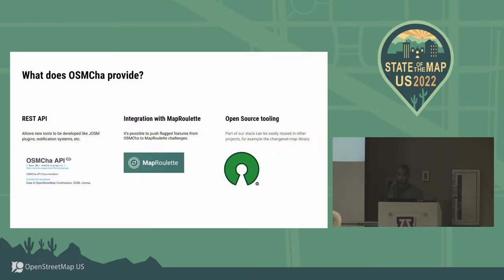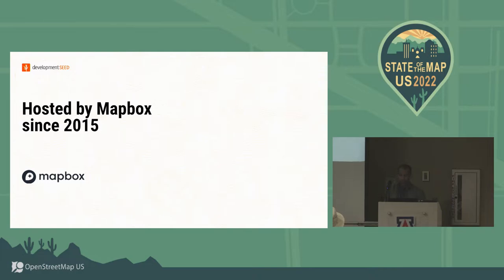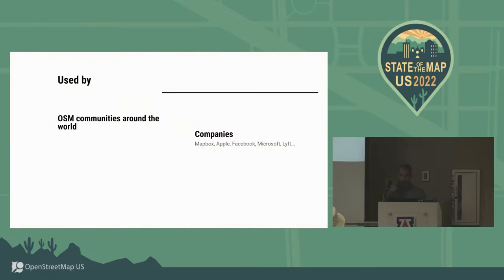OSMCHA also provides a REST API that can be used to integrate it with other tools. We have some integration with MapRoulette, allowing you to take flagged features from OSMCHA and input them directly into a MapRoulette challenge. It's all open source and has been hosted by Mapbox since 2015. It's used by many communities around the world and by companies like Mapbox, Apple, Facebook, Microsoft, Lyft, and others.